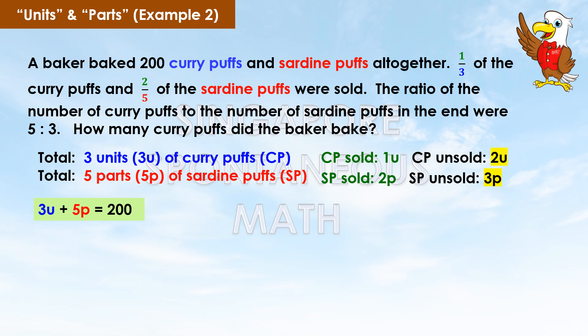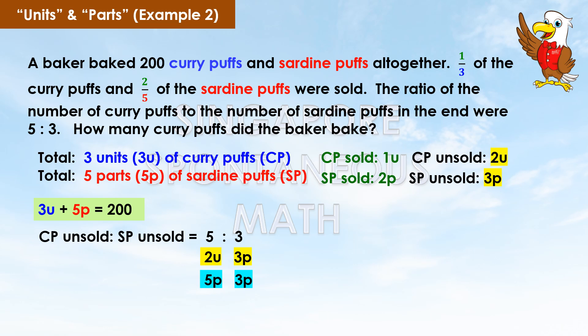Three units plus five parts equals 200. The ratio of unsold curry puffs to unsold sardine puffs is 5 to 3. Unsold curry puffs is 2u; unsold sardine puffs is 3p. Since unsold sardine puffs is 3p, unsold curry puffs would be 5p. Therefore, 2u equals 5p.